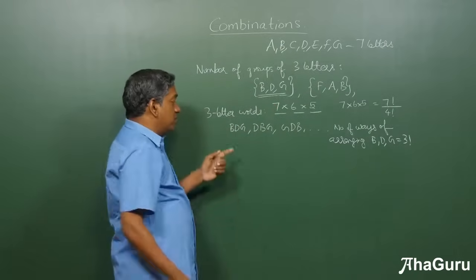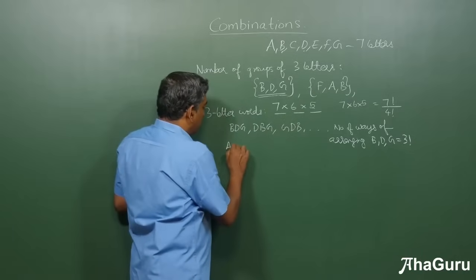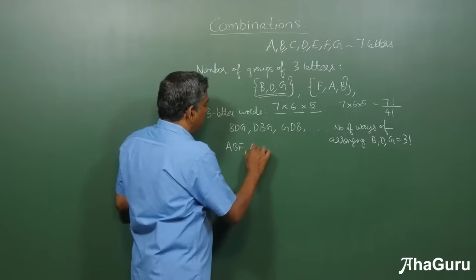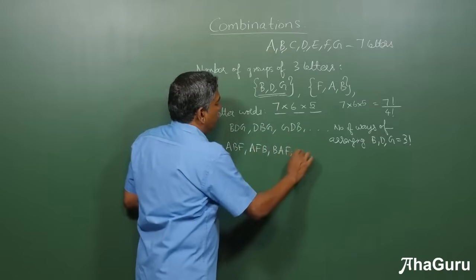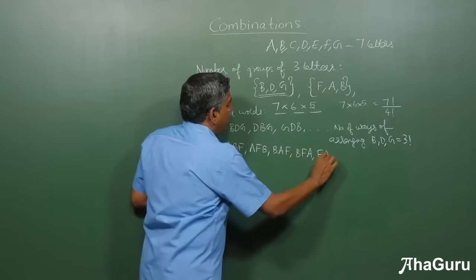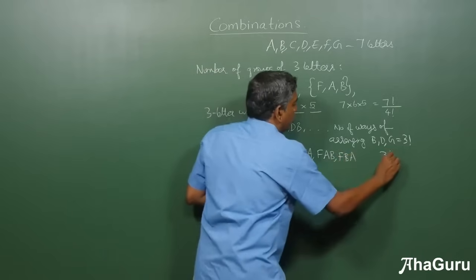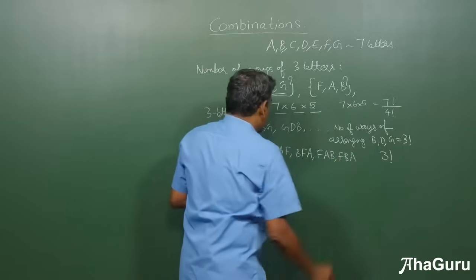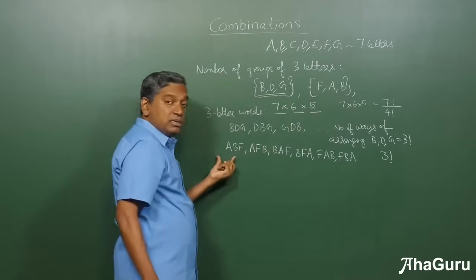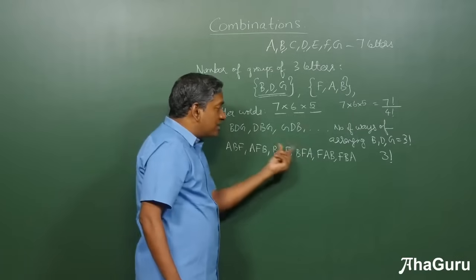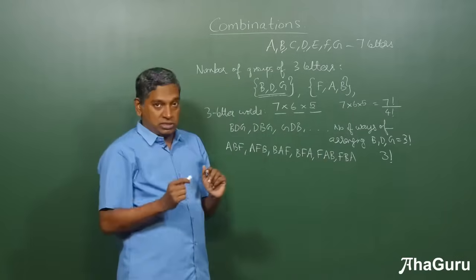Now, you might say, sir, this is true for B, D, G. What about FAB? Well, FAB also has 3 letters. So, you will start with ABF, AFB, I'm doing it systematically now, BFA, then FAB, FBA. Again, 3 factorial. You don't have to list everything. You should know that because there are 3 letters, every group of 3 letters will have 3 factorial words where the same set of letters are used.